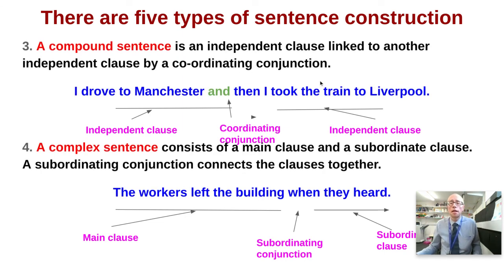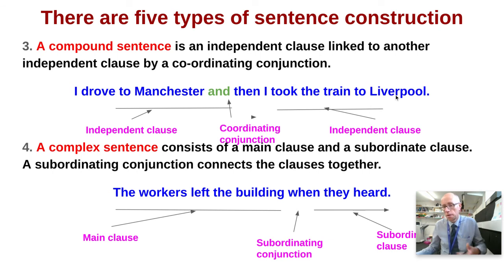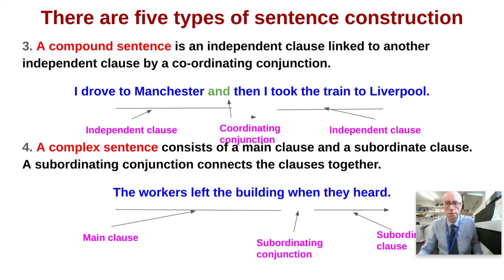Things now get more complicated because we have compound sentences. A compound sentence is an independent clause linked to another independent clause by a coordinating conjunction or connective. Here's an example: 'I drove to Manchester' — that's an independent clause — 'and I took the train to Liverpool' — another independent clause — glued together by the coordinating connective 'and'. Other popular coordinating connectives include 'then', 'and', and 'so'.